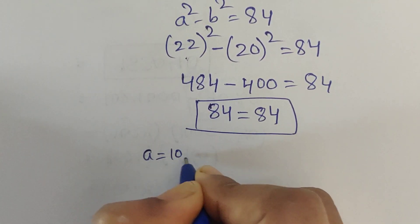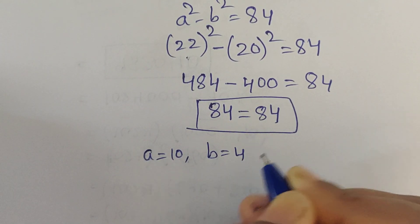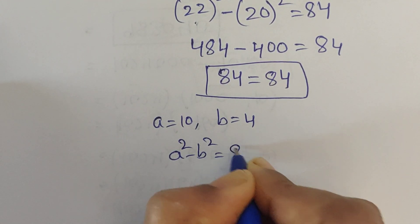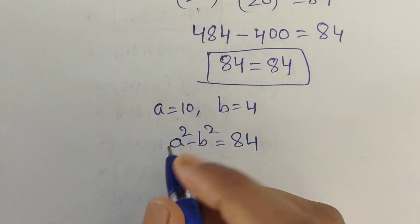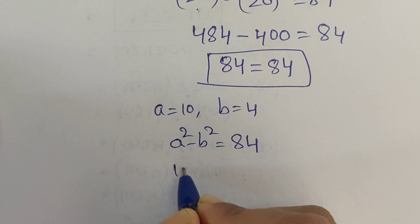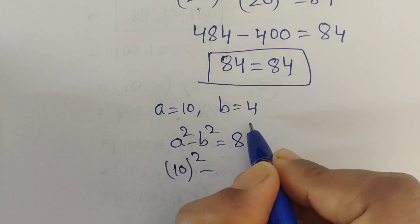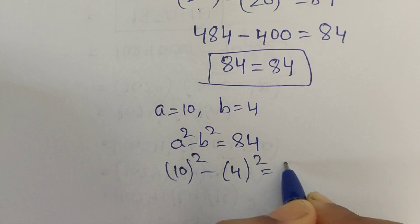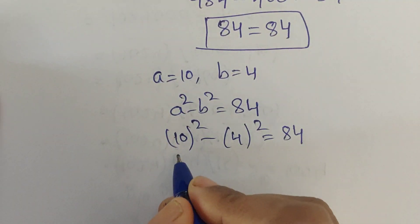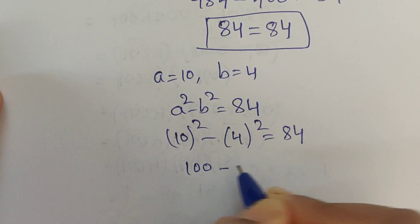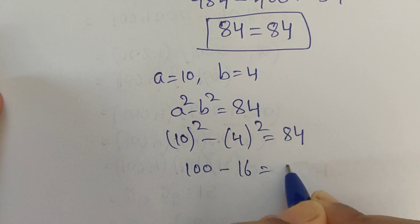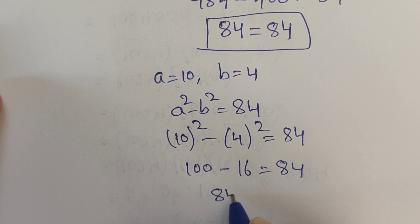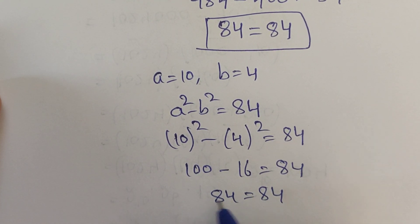Verification for Case 5: a equals 10 and b equals 4. The question is a squared minus b squared equals 84. Substituting: 10 squared minus 4 squared equals 100 minus 16 equals 84. So 100 minus 16 equals 84 — this is true.